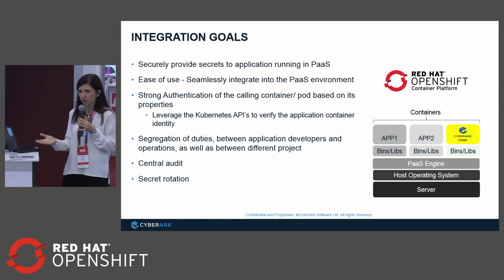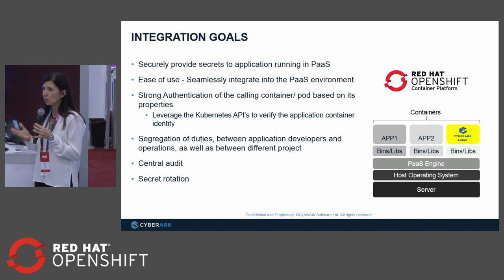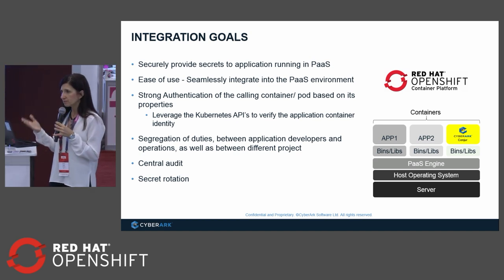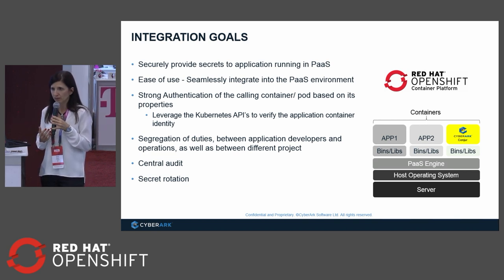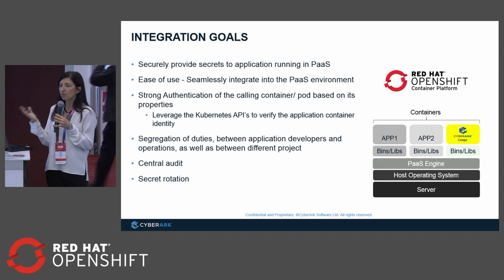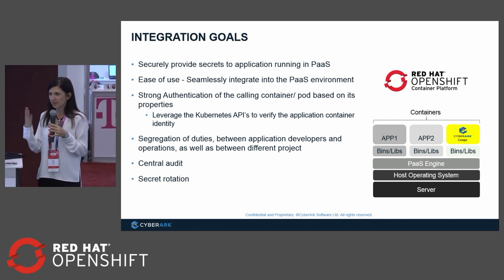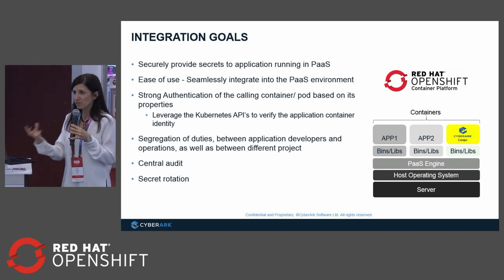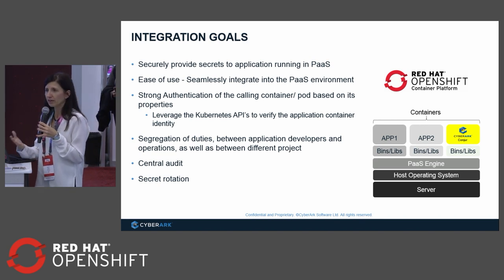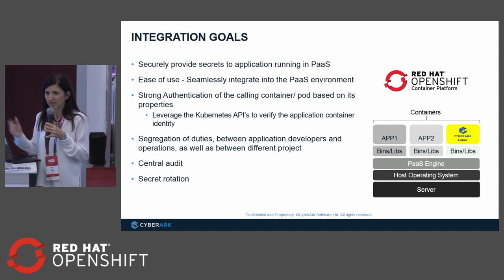So what have we done with OpenShift? We have integrations with many tools and environments. Today we'll talk about how we can deliver secrets into applications running within your OpenShift environment in a highly secure manner while freeing developers from dealing with that. The integration goals are around security — how do we securely authenticate each container and each application that is running. We don't want to replace hard-coded credentials with a password to our solution, because that just shifts the problem. We want to solve the bootstrap problem — the secret zero problem — while still providing central audit, segregation of duties, and least privilege.